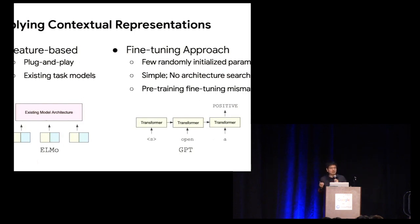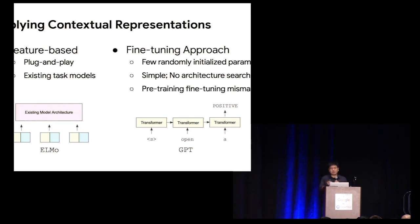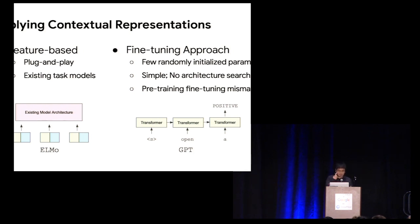Before we discuss BERT, let's compare these two approaches. The advantage of the feature-based approach is that you can plug and play the embeddings — you can train contextual representation embeddings, treat them as features, and feed them to existing text models. For example, you can compute ELMO embeddings and feed them into a BiLSTM model to form a powerful question-answering system. The fine-tuning approach has the advantage of very few randomly initialized new parameters, and it's conceptually simple because we don't have to do architecture search.